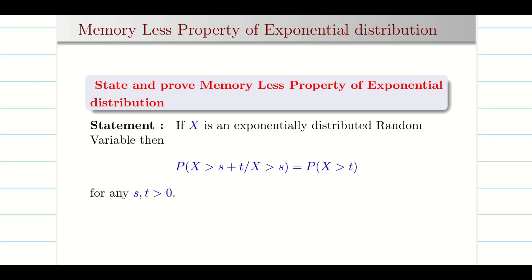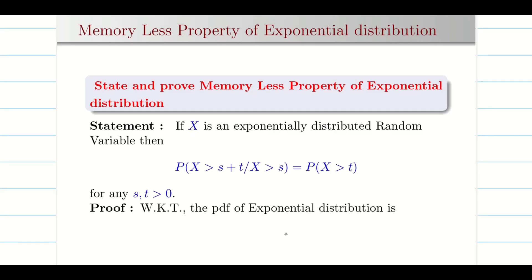This property essentially implies that the distribution of future outcomes of the random variable remains unchanged regardless of how much time has already passed. Now we are going to prove this. First of all, we take the RHS.